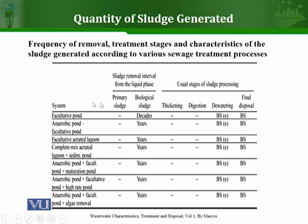Moving on to further systems — facultative ponds, anaerobic ponds, and other lagoons and ponds — there is no significant production of primary sludge, but there is production of biological sludge. This is because all these systems utilize microorganisms to degrade and stabilize the organic content present in the wastewater. Since biological processes are operating, the sludge produced is called biological sludge, and it is mostly dewatered before its final disposal.